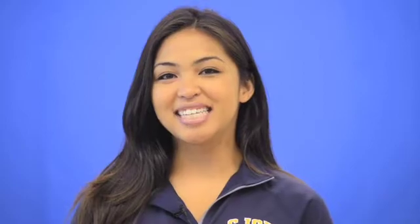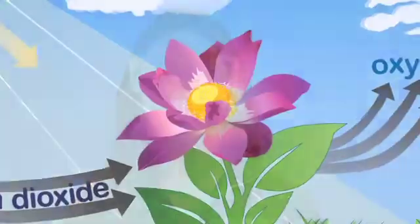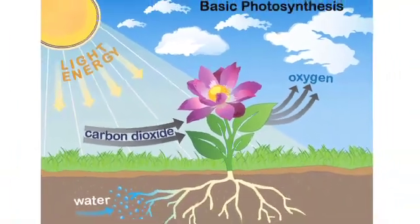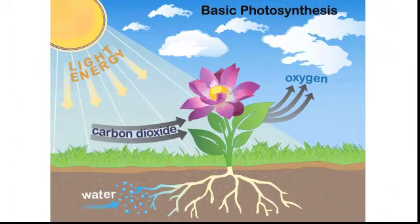So, let's get started. First, let's take a minute to review the basics of photosynthesis and respiration. Photosynthesis is a process by which plants take carbon dioxide from the atmosphere, absorb water, and use the energy from sunlight to produce sugar and oxygen.